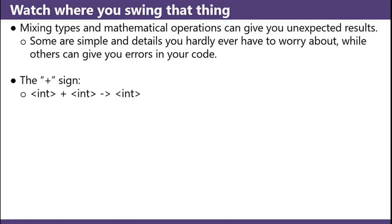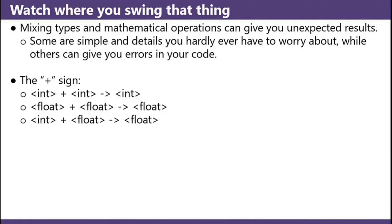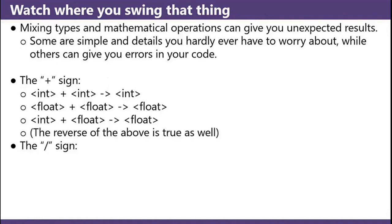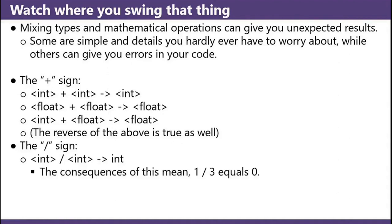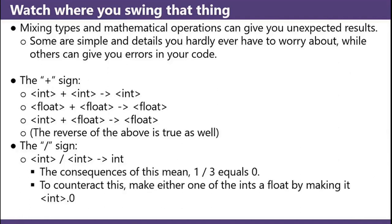Plus sign: an int and an int equals an int. A float and a float equals a float. But if you mix an int and a float, you'll always get a float regardless of the order. The division sign: int divided by an int gives you an int. Consequences of this means that 1 divided by 3 equals 0. To counteract this, make either one of the ints a float by making it int point zero.